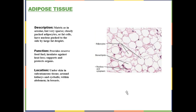Then you have adipose tissue. It contains adipocytes or fat cells. It is there for energy reserves and also provides insulation — your subcutaneous fat underneath your skin helps keep you warm. It's also packed around certain organs like your eyes and your heart to provide physical protection. You find it under your skin and by your kidneys, eyes, and heart where it's providing physical cushioning.